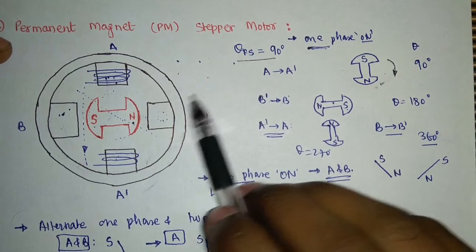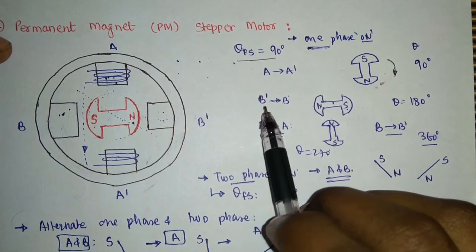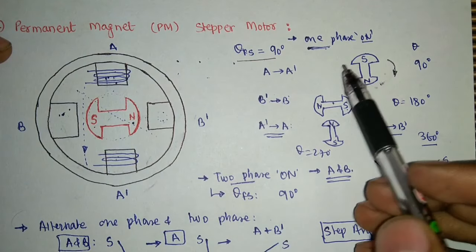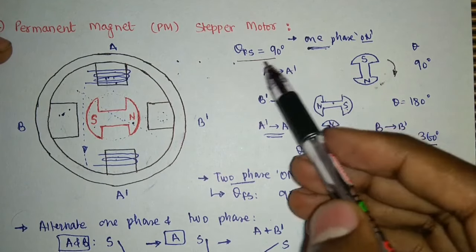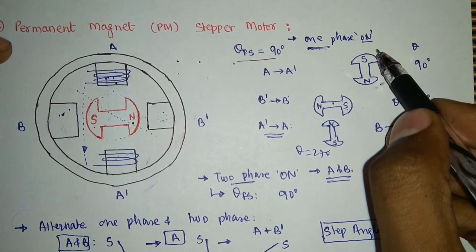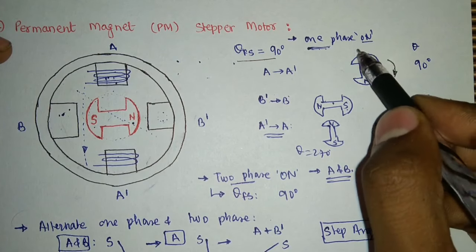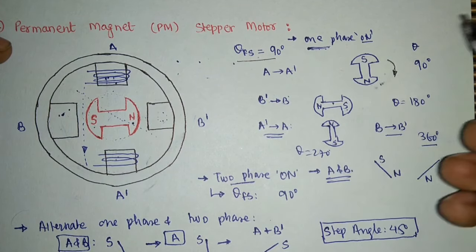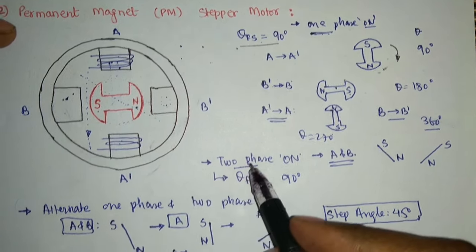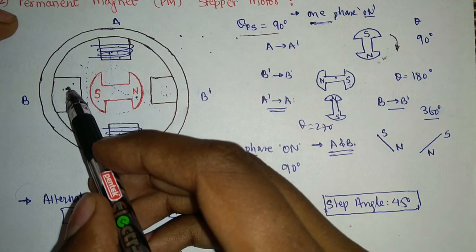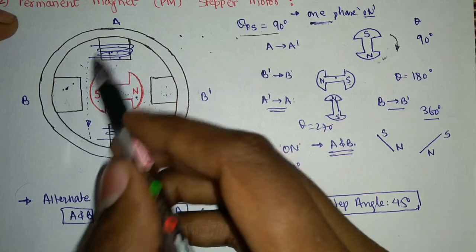This full step operation can also be represented with a truth table or logic table, similar to what we did for the variable reluctance type. This mode is known as 'one phase on at one time,' and because we energize only a single phase at a time, we get a full step operation.